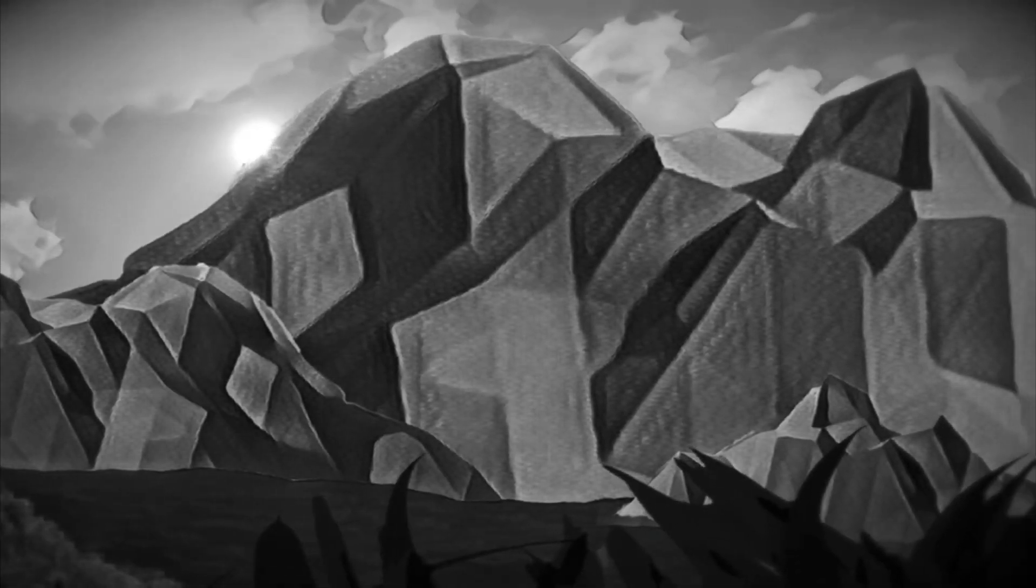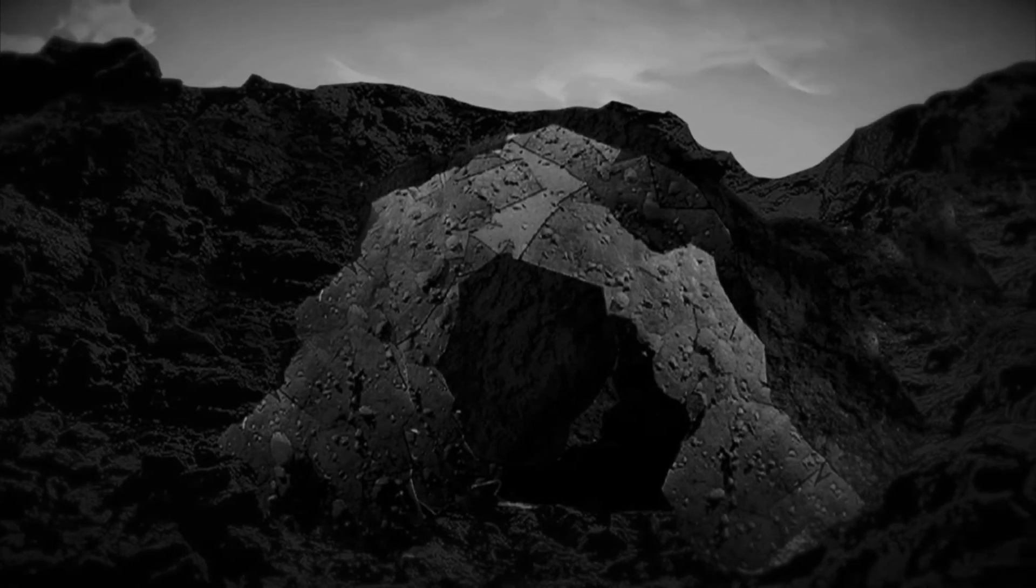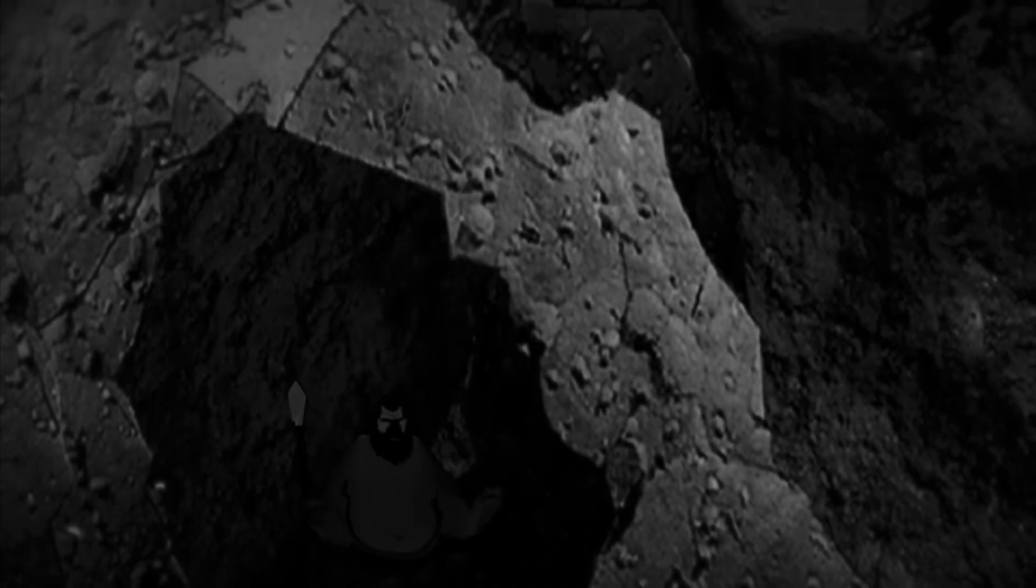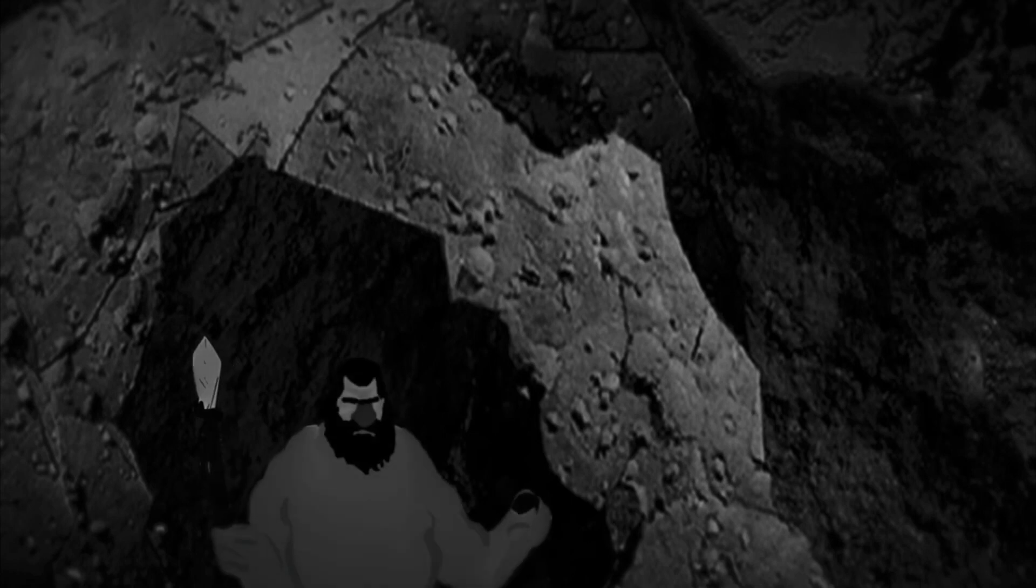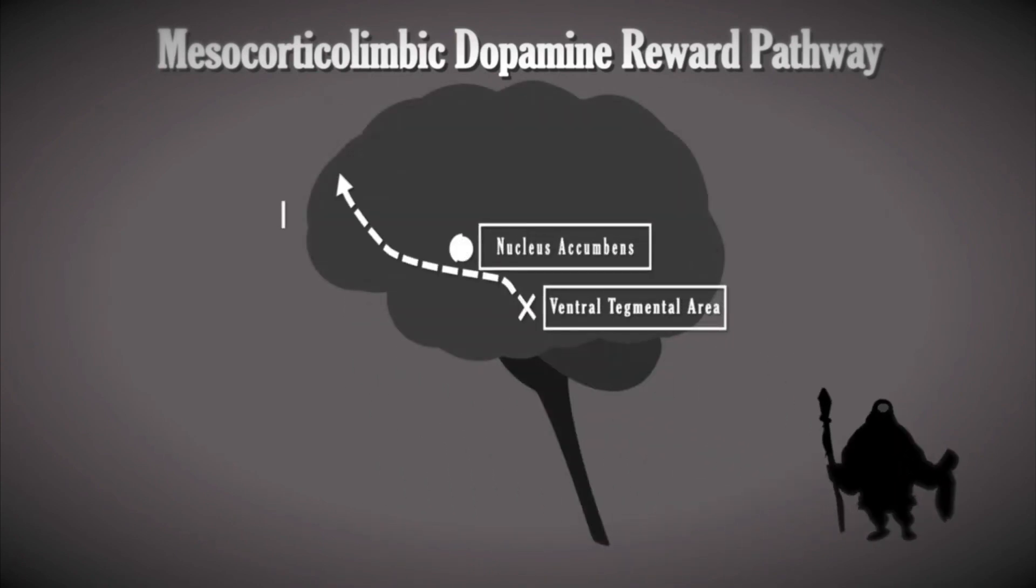We must first journey back to a time when staying alive was a challenge. Unbeknownst to our prehistoric cousins, their everyday survival depended on the actions of a brain system scientists now call the mesocorticolimbic dopamine reward pathway. Found deep within the center of the brain, this pathway is activated when we encounter new stimuli that are important for our survival.